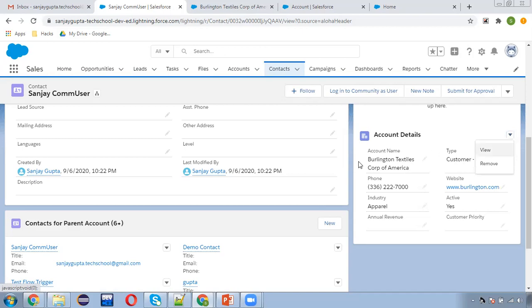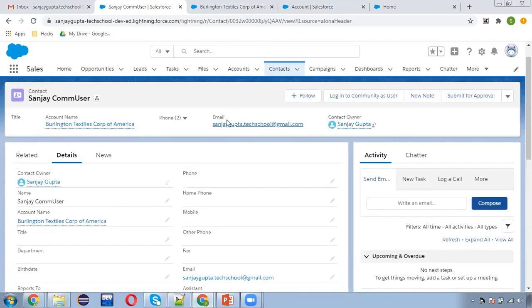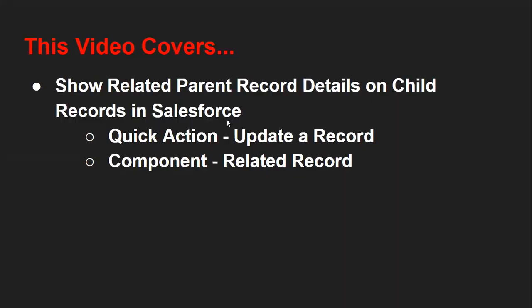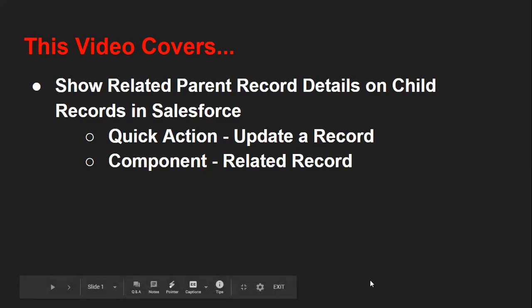I hope with this you understood how we can show information of a related parent record on a child record itself. You need two things for that: first create a quick action, and then use the Related Record component on the lightning page. I hope this video will help you implement this. If you want to watch more Salesforce training videos, go to the description for links to various playlists. Thank you for watching.